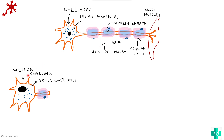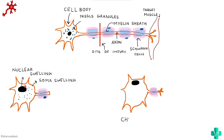In the proximal part there is swelling of the soma. In the cell body there will be swelling of the soma as well as the nucleus, which becomes eccentrically located. These changes occurring in the proximal part, along with what happens distally, constitute what is known as Wallerian degeneration.